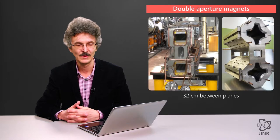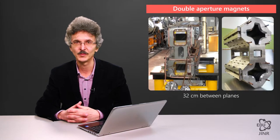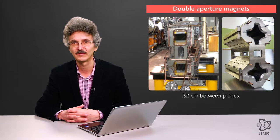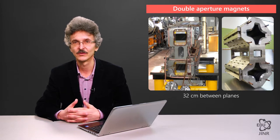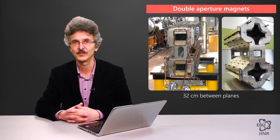The NICA project is intended to use two of those aperture magnets. The distance between the median planes of the rings is approximately 32 cm, which allows minimization of the beam convergence and divergence section.